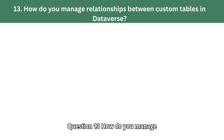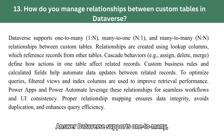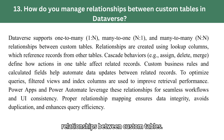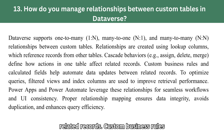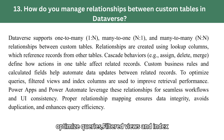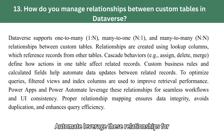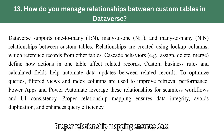Question 13: How do you manage relationships between custom tables in Dataverse? Dataverse supports one-to-many, many-to-one, and many-to-many relationships between custom tables. Relationships are created using lookup columns, which reference records from other tables. Cascade behaviors — such as assign, delete, and merge — define how actions in one table affect related records. Custom business rules and calculated fields help automate data updates between related records. To optimize queries, filtered views and index columns are used to improve retrieval performance. Power Apps and Power Automate leverage these relationships for seamless workflows and UI consistency. Proper relationship mapping ensures data integrity, avoids duplication, and enhances query efficiency.